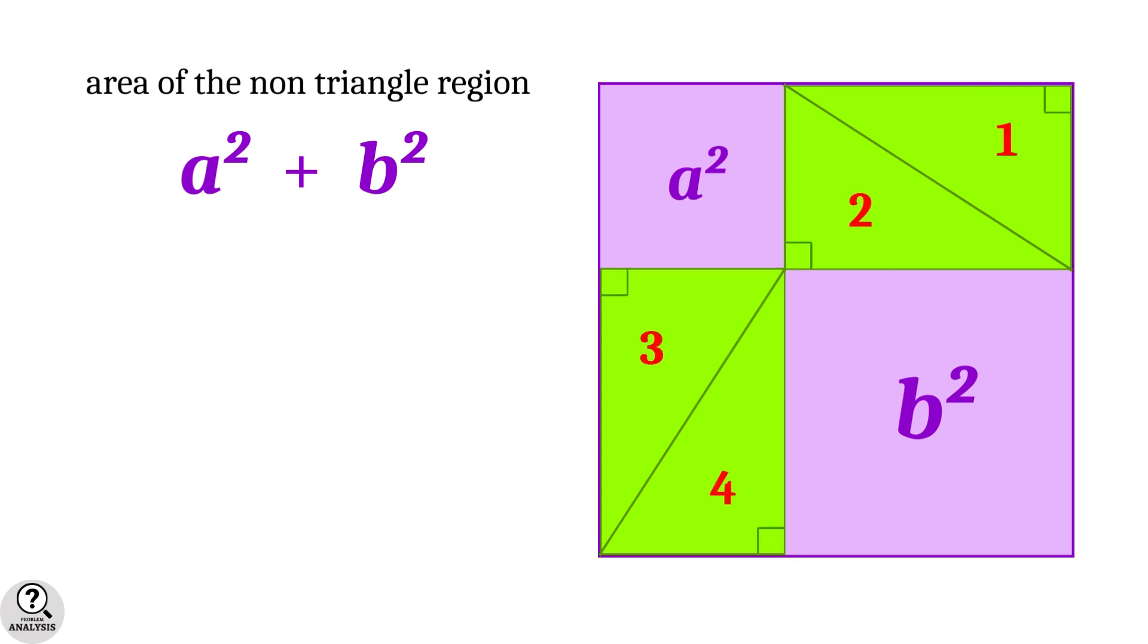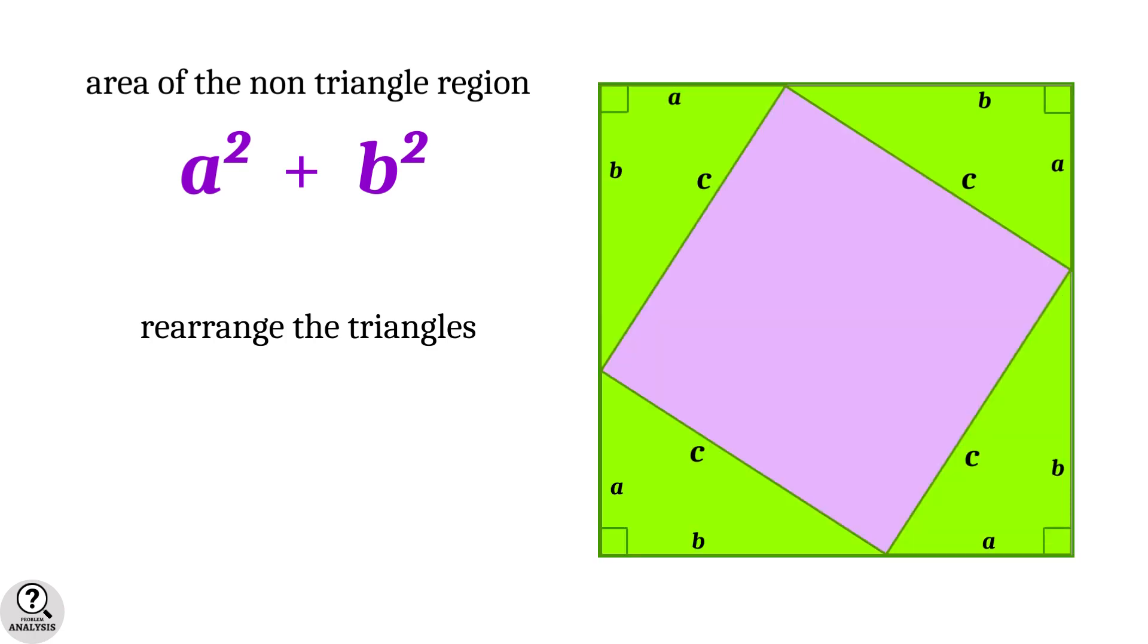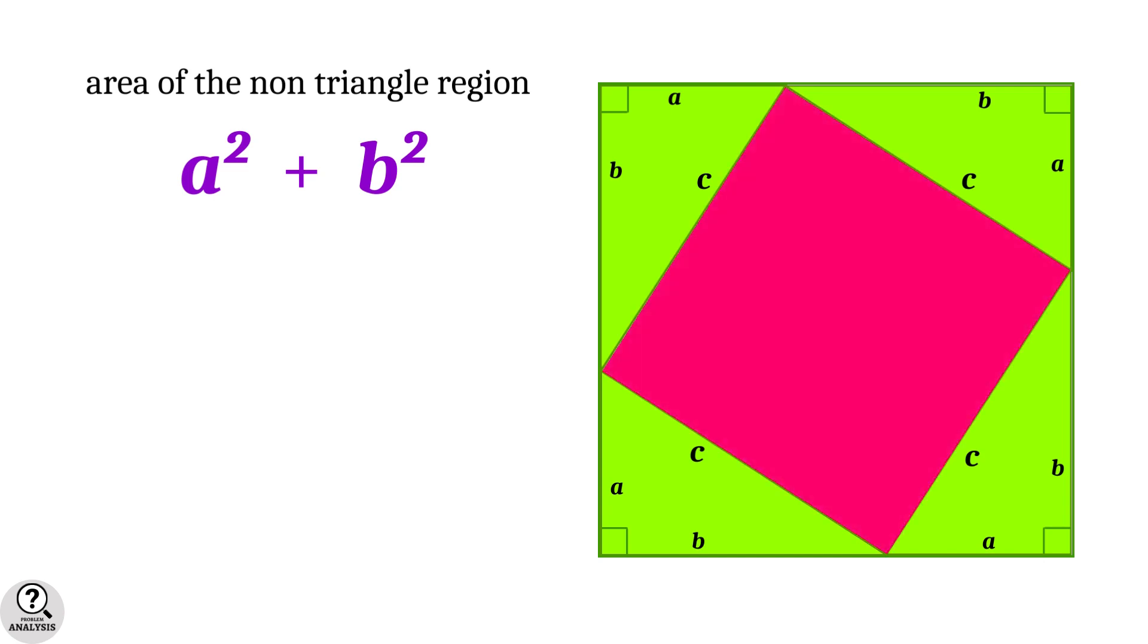We have four right triangles. Just rearrange them like this. Right, up and down. Now, observe that the non-triangular region turns to a square of side length c units. Which means, area of this region is c².